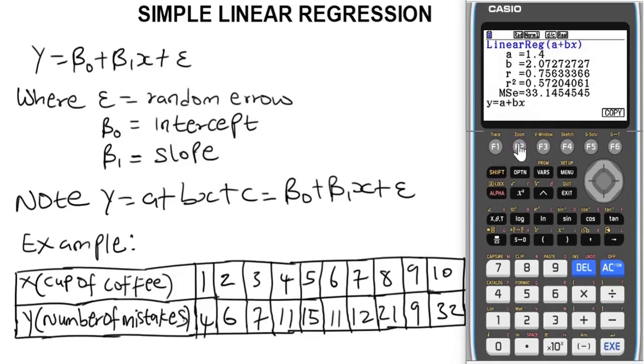This will be the result of the answer. We have our a, which is our intercept, to be 1.4, and we have our b, which is our slope, to be 2.07272727, and we have the correlation coefficient r to be 0.7563.